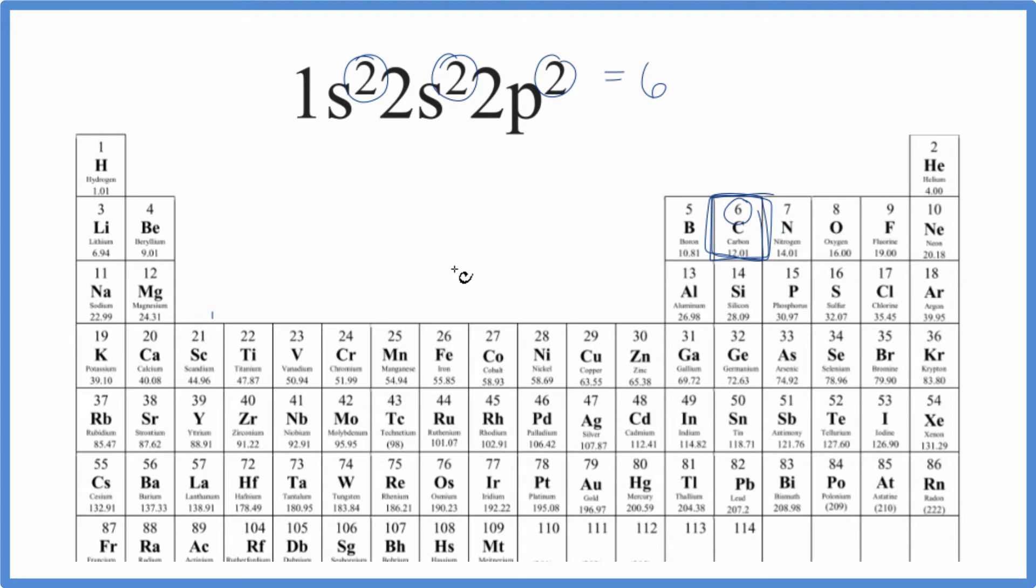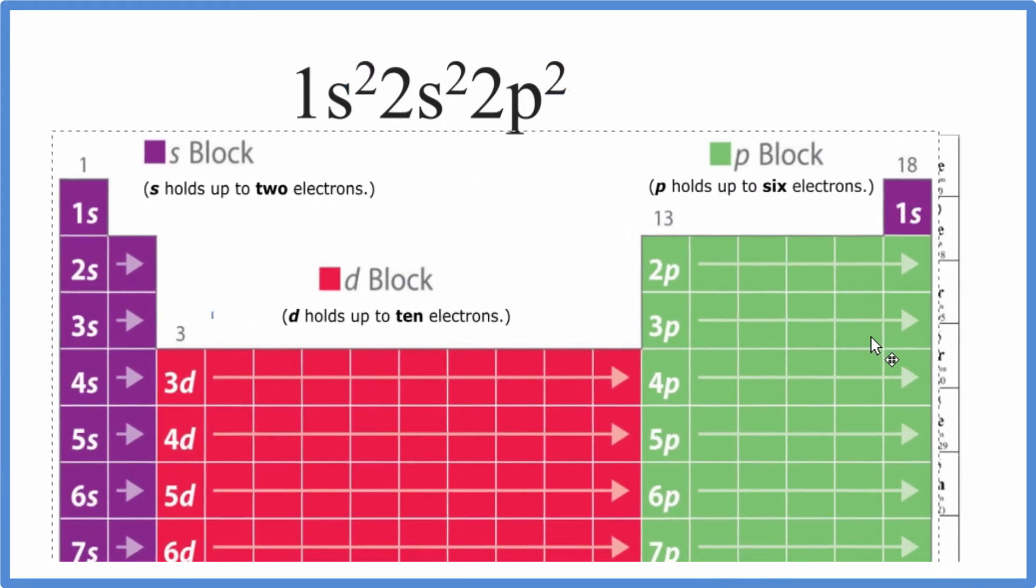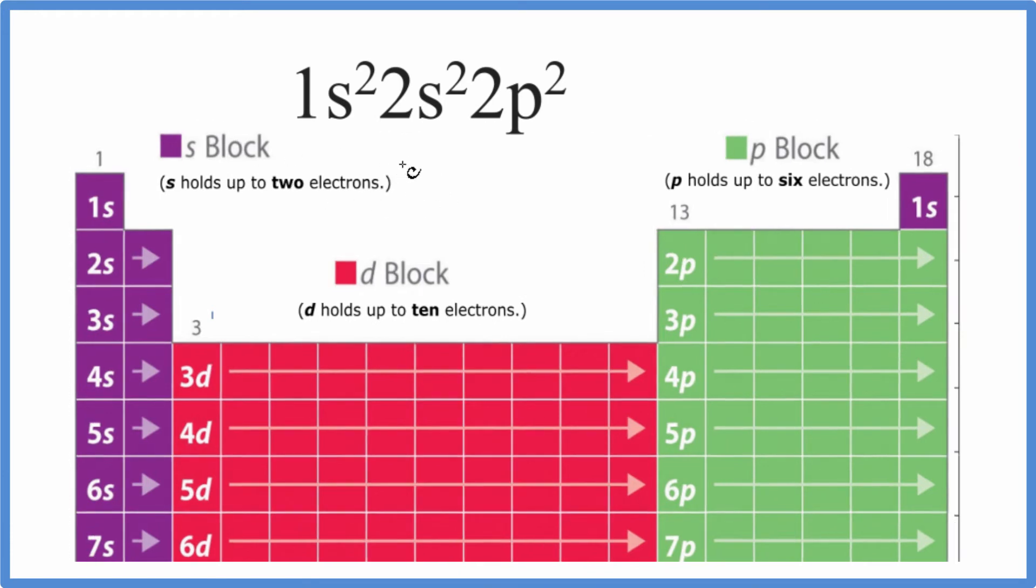We can also do this another way. We can look at the periodic table broken up into orbital blocks. The s block, that holds up to two electrons. All of these are going to end in s1, s2.